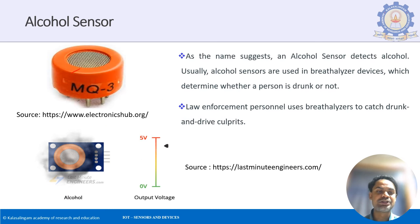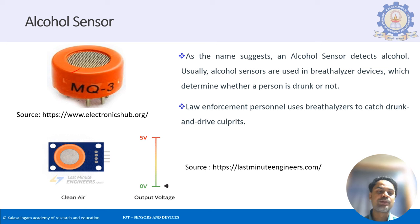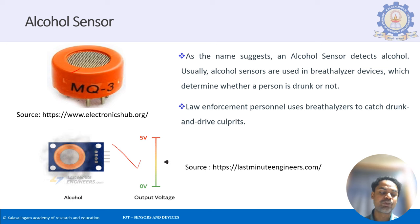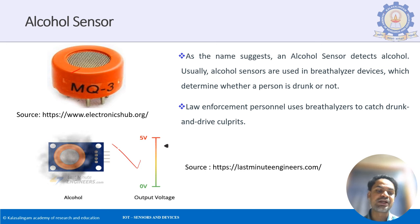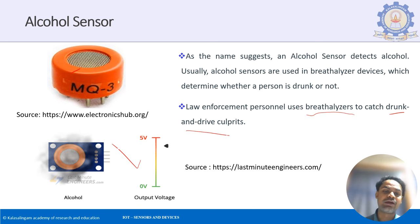The alcohol sensor is different from the MQ gas sensor — it specifically detects alcohol. When a person blows and alcohol is detected, the voltage increases; otherwise it is low. It is used in breath analyzers by traffic police to catch drunk drivers.